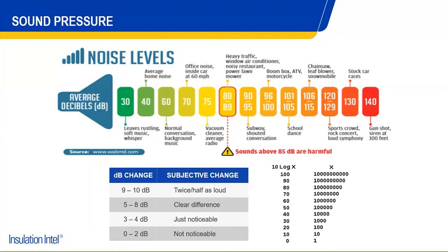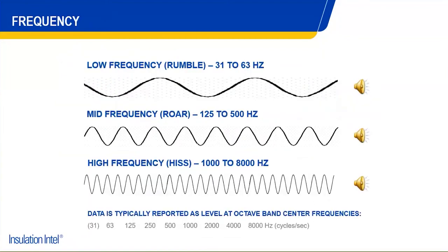Looking at subjective change: a 9 to 10 decibel change is perceived by the human ear as either a doubling or halving of that volume, depending on direction. A 10-point increase in the scale is a pretty significant increase in volume and is really perceived as a doubling of that sound. Something to be aware of — small changes in decibels represent very large perceptual differences.